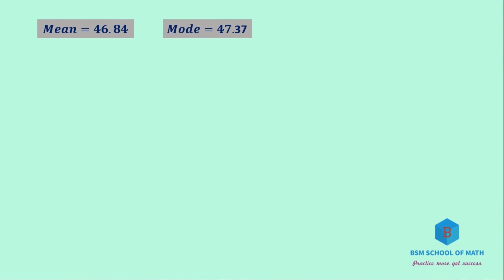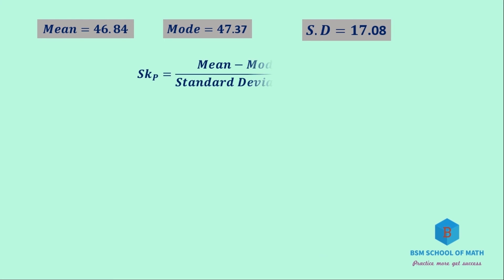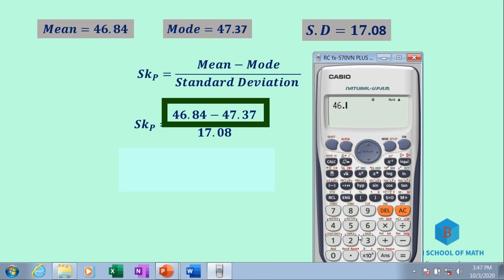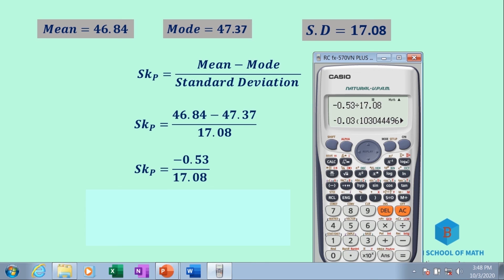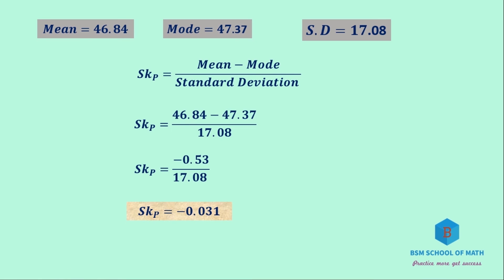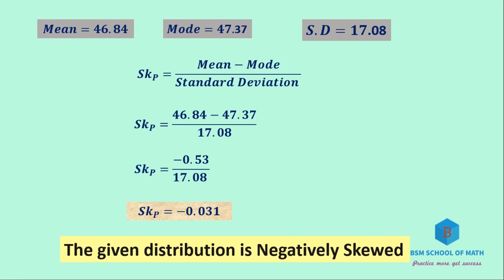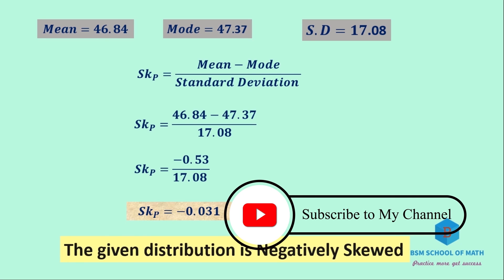Finally, SKP = (Mean − Mode) ÷ Standard Deviation = (46.84 − 47.37) ÷ 17.08 = −0.53 ÷ 17.08 ≈ −0.03. Since the answer is negative, the given distribution is negatively skewed. Thank you for watching — please subscribe to my channel. See you in another video.